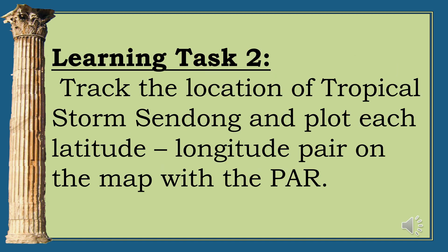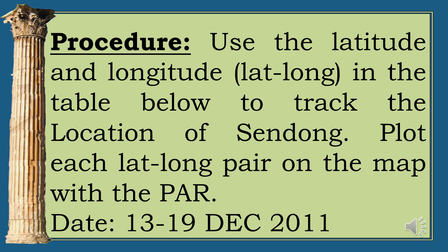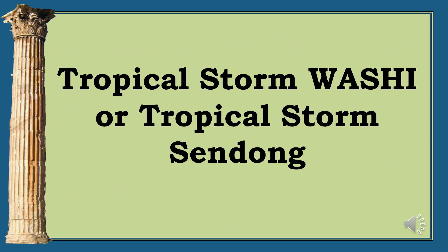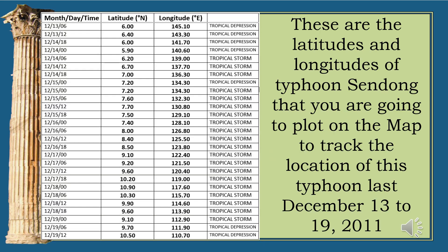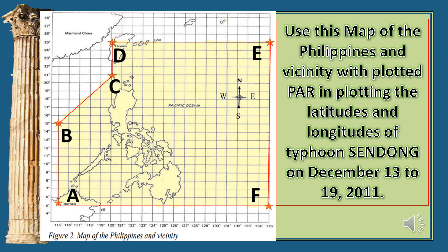Learning Task 2: Track the location of Tropical Storm Sentong and plot each latitude-longitude pair on the map with a PAR. Procedure: Use the latitude and longitude in the table below to track the location of Sentong. Plot each lat-long pair on the map. The data covers Tropical Storm Washi, also known as Sentong, from December 13–19, 2011. Use this map of the Philippines and vicinity with plotted PAR.